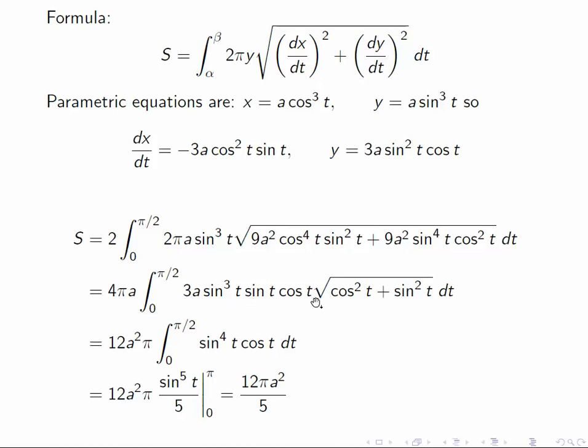And notice that sine t cosine t is always positive on this interval. This is why it's easier to do it like this than try to do it as an integral from zero to pi.